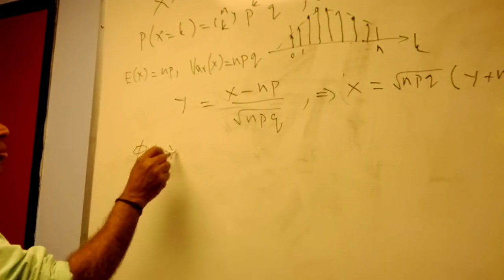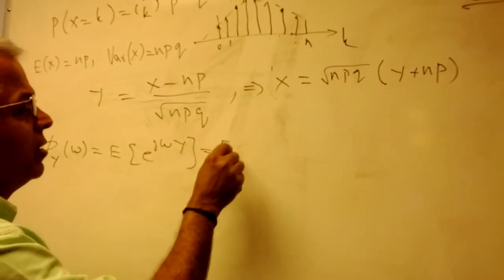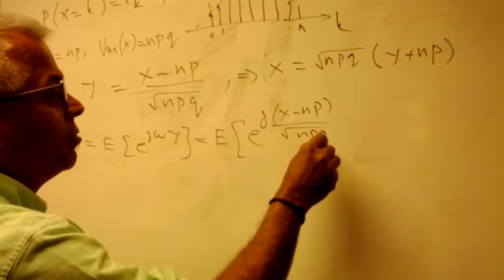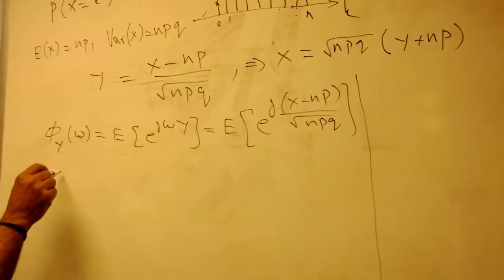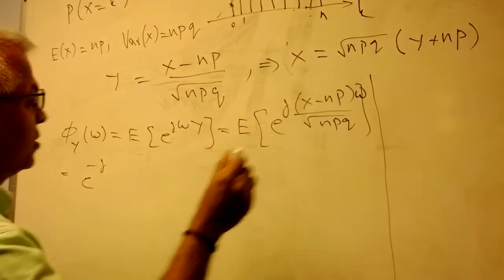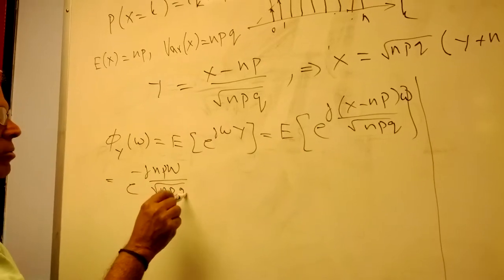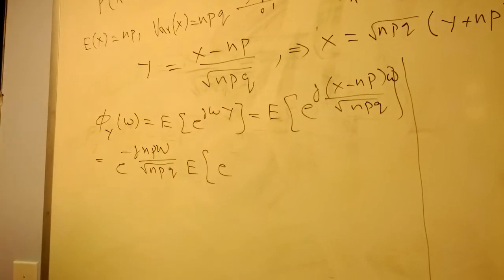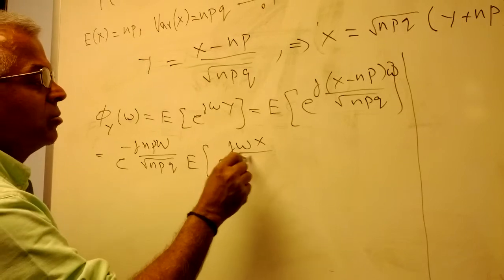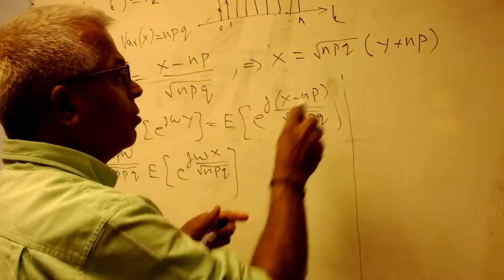So let's look at the characteristic function of y. That's by definition E[e^(jωy)]. I substitute for y: E[e^(jω(x − np) / √(npq))]. After simplification, this becomes e^(−jnpω / √(npq)) multiplied by the expected value of e^(jωx / √(npq)). This is the characteristic function of x evaluated at ω / √(npq).